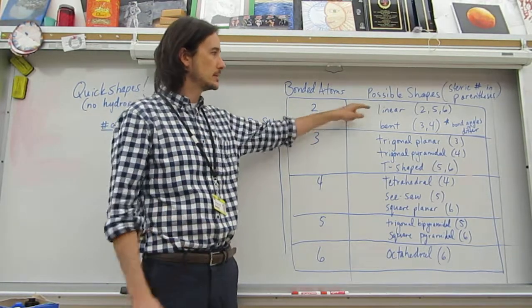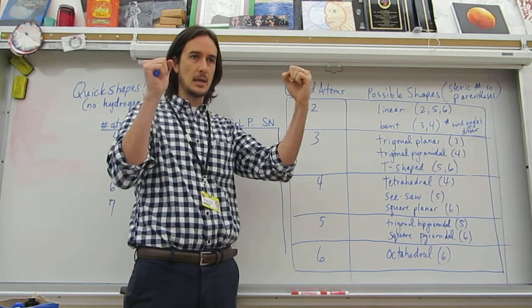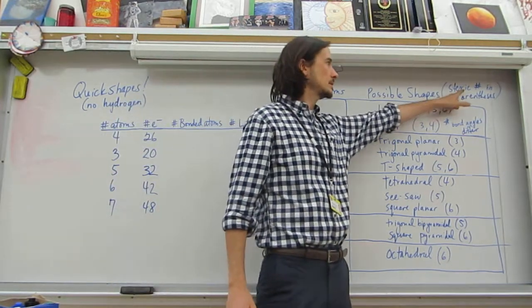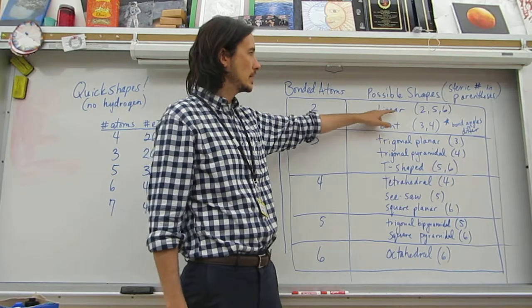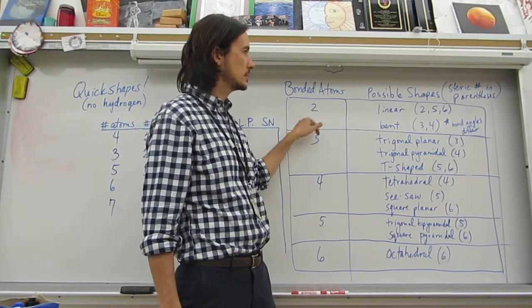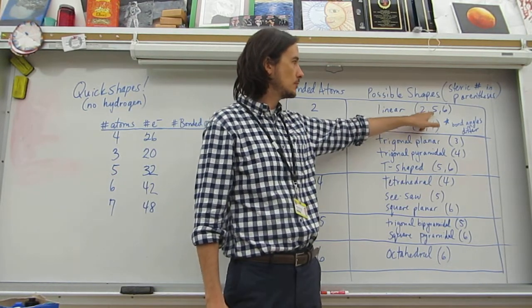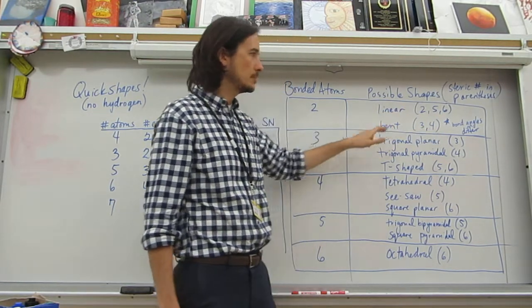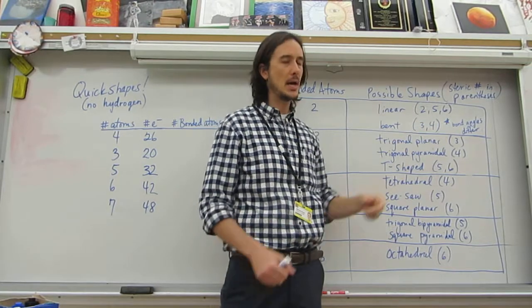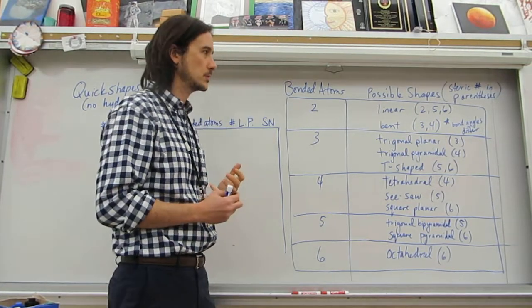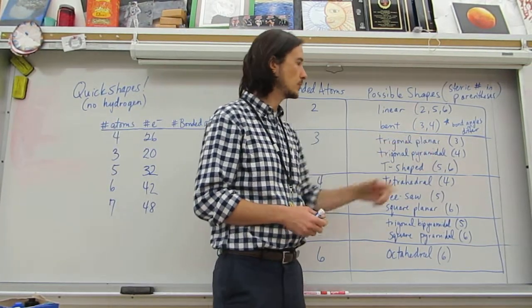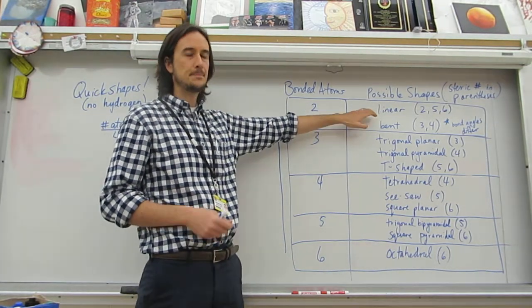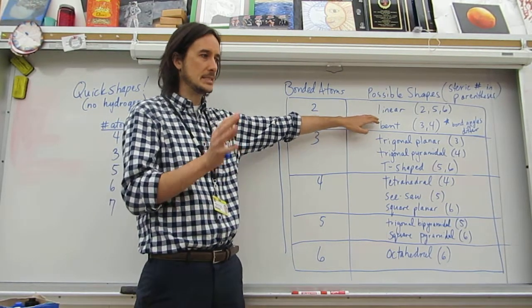So if it's two atoms bonded, it's either going to be linear in a line or bent. And in parentheses, I wrote the steric number. So if you have two bonded atoms and the steric number is 2, 5, or 6, it's going to be a linear shape. If the steric number is 3 or 4, it's going to be bent. And I did put a star here. The bond angles are different for steric number 3 and steric number 4. So even though you're calling them both bent, the shape isn't exactly the same.